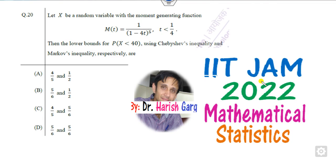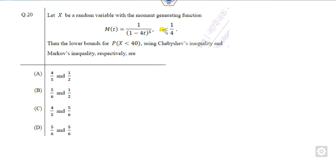Hello students. Welcome to the next lecture on the IIT JAM 2022 Mathematical Statistics Solution. Today, we will discuss how you can solve question 20 within one minute. The question asks you to find the lower bound of this probability using Chebyshev inequality and Markov inequality. That is a very simple task. How you can solve that, we will see in this.